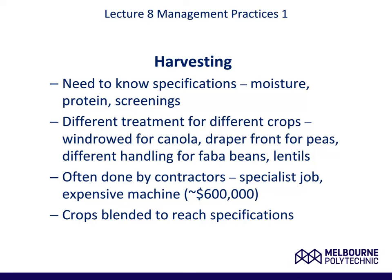It is important to get your harvesting correct. You need to know the specifications of your particular crop. For example, some grain crops require the grain to be harvested when the moisture is below a certain percent — say 15 or 12 percent — when your protein is above or within a range, and where your screenings are acceptable. Different treatments apply for different crops: wind draper front for canola, draper front for peas, different handling for faba beans and lentils. This needs to reflect your infrastructure as well. Harvesting can be and is often done by contractors, as some of the machinery is expensive and this may be a more economically viable way to harvest your crop.